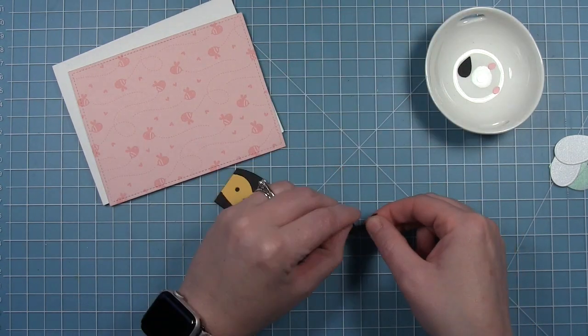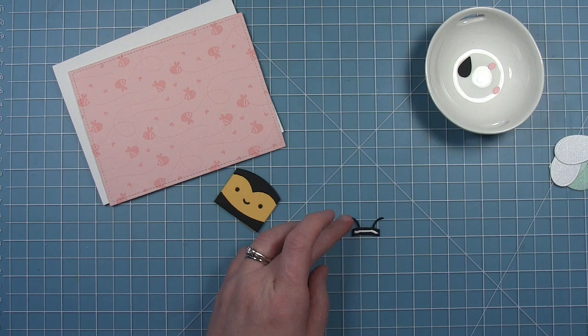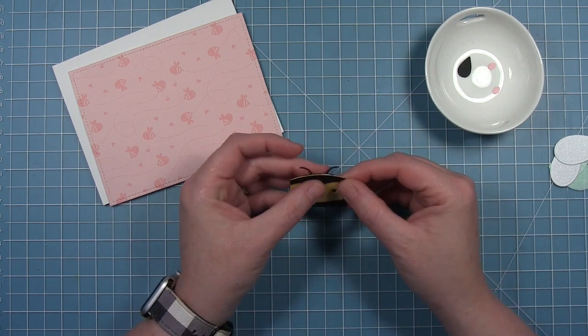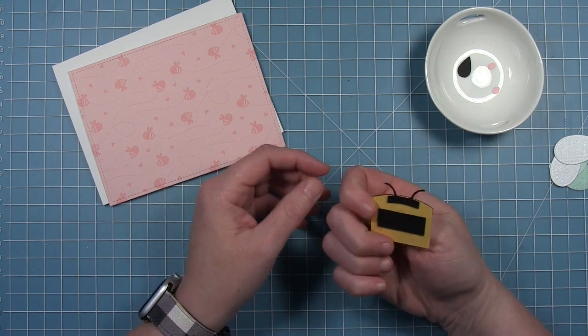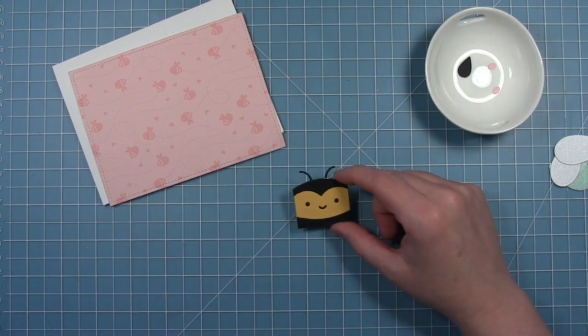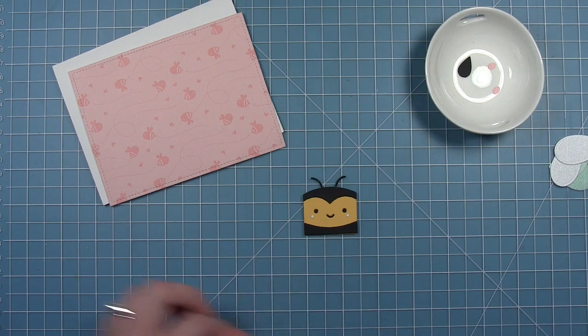Then I'm going to layer his little antenna behind his head. I had the stinger cut out there but it didn't really work for the design that I decided to do. I'm also going to add his little rosy cheeks.